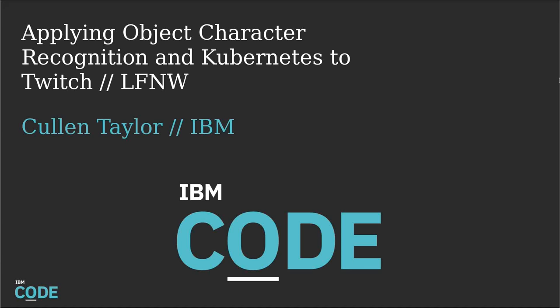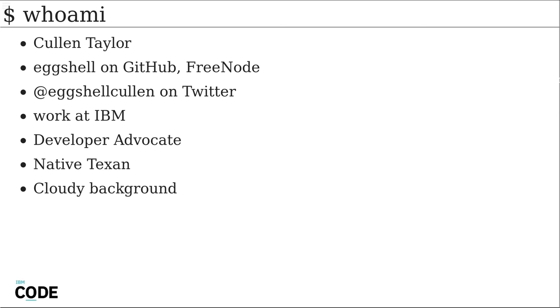My name is Colin Taylor. I work for IBM, and this is 'Applying Object Character Recognition and Kubernetes to Twitch,' which is full of buzzwords. I work at IBM as a developer advocate. I'm a native Texan and I have a quote-unquote cloudy background.